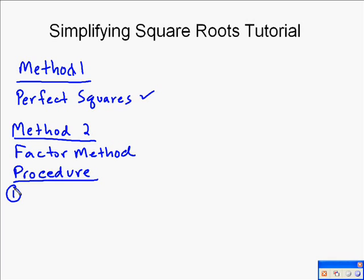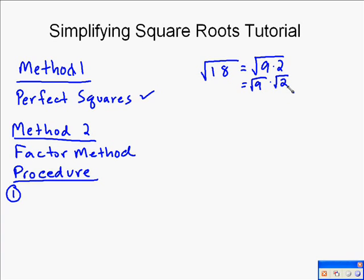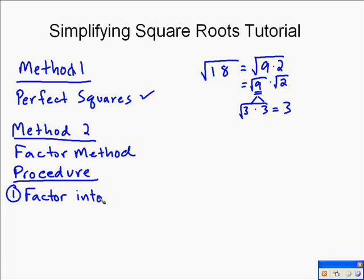Let's simplify the square root of 18. Using the perfect square method, 18 factors into the square root of 9 times the square root of 2, because 9 is a perfect square. The square root of 9 is the square root of 3 times 3 — those are prime factors, and they form a pair. Whenever you have a pair of prime factors like 3 times 3, which equals 9, taking the square root gives you 3. So every time we have a pair of numbers, we take one of them out front.